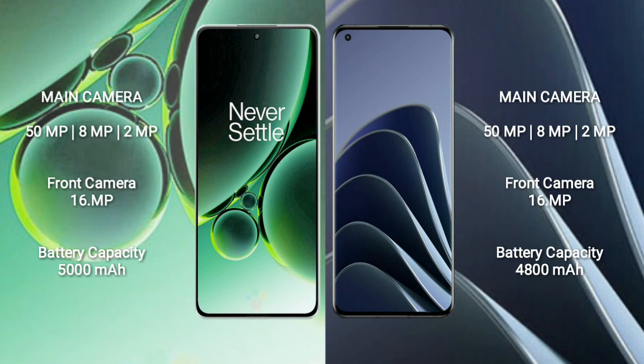OnePlus Nord 3 features a rear triple camera setup: 50MP, 8MP, and 2MP, with a 16MP front camera. OnePlus 10T also features a rear triple camera setup: 50MP, 8MP, and 2MP, with a 16MP front camera.